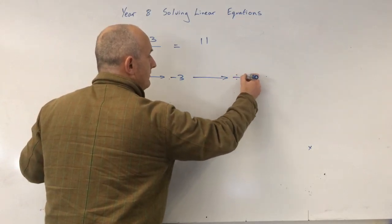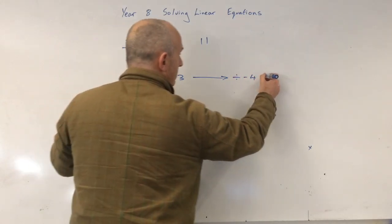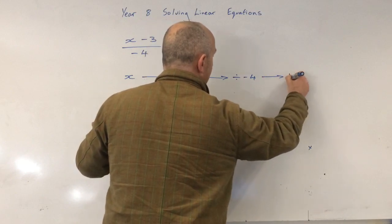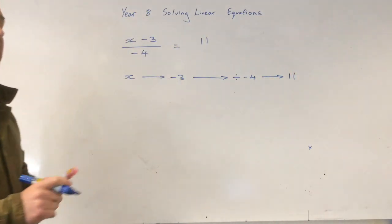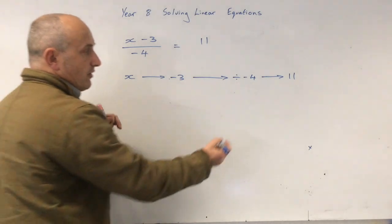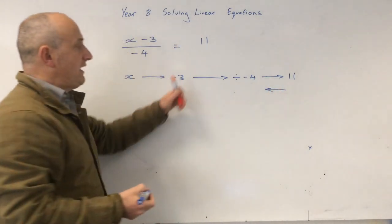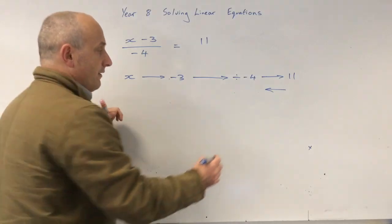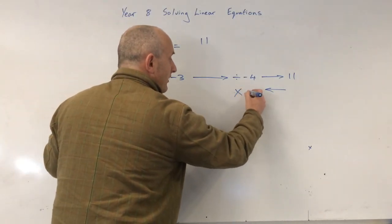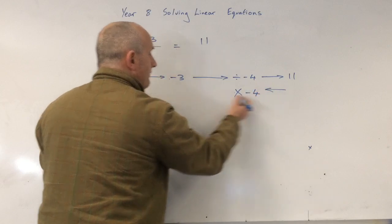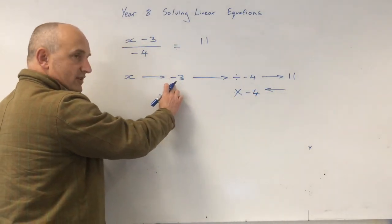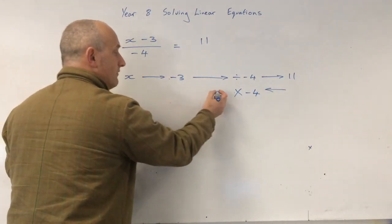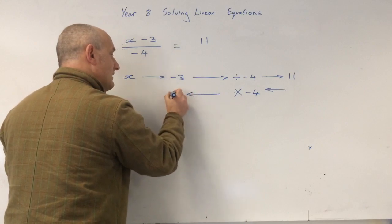We're going to do it. So x minus 3 divided by negative 4 is 11. So now what we're going to do is we're going to do the inverse. What's the inverse of dividing by negative 4? Multiplying by negative 4. What's the inverse of subtracting 3? Adding 3.